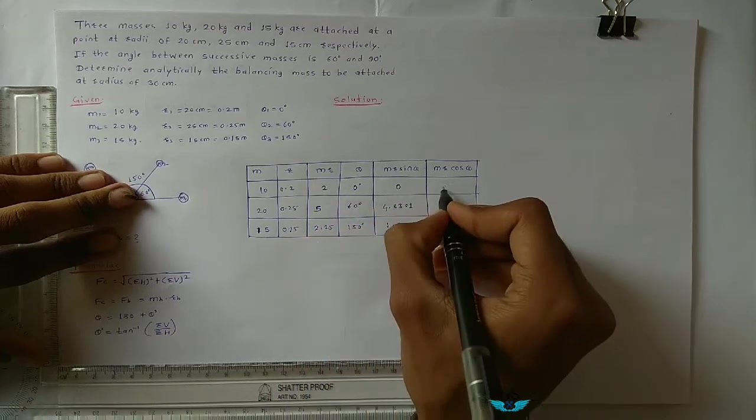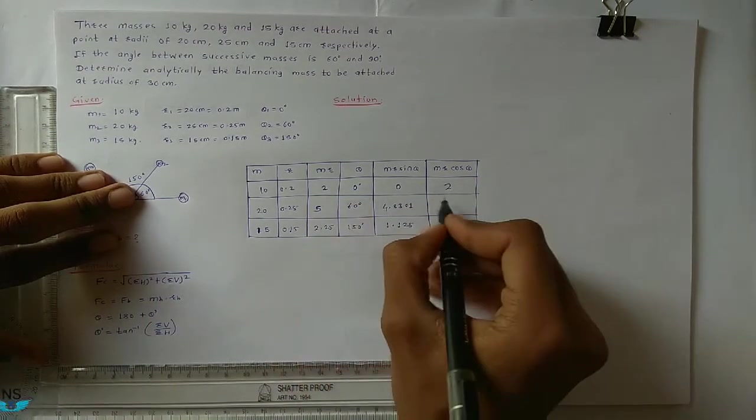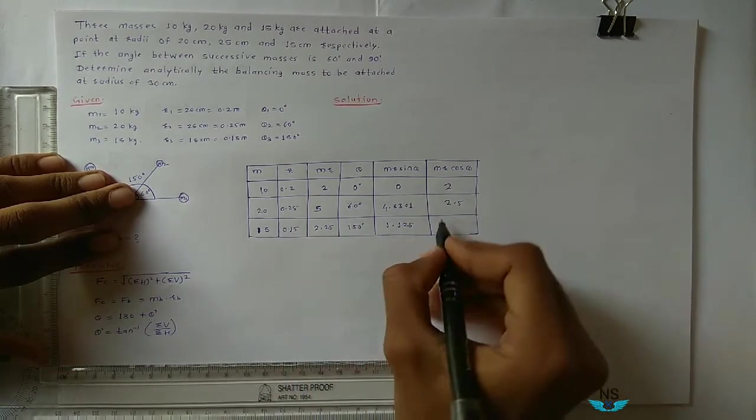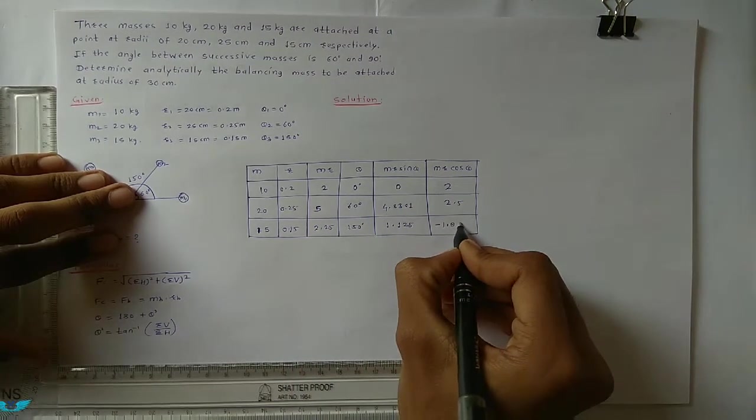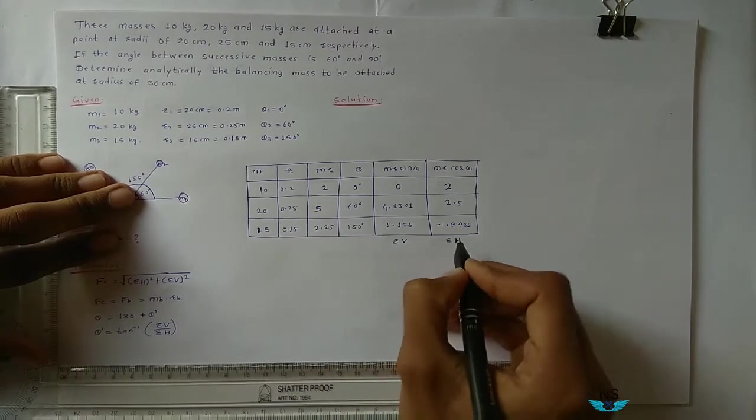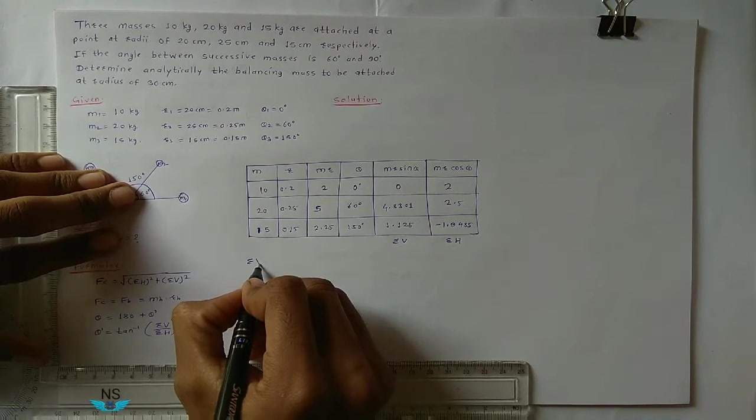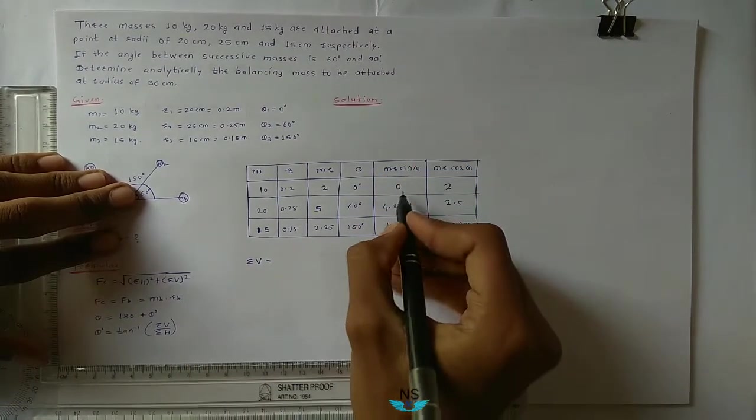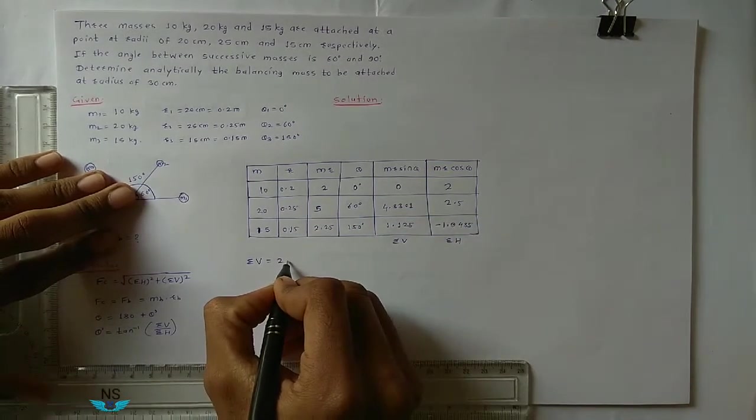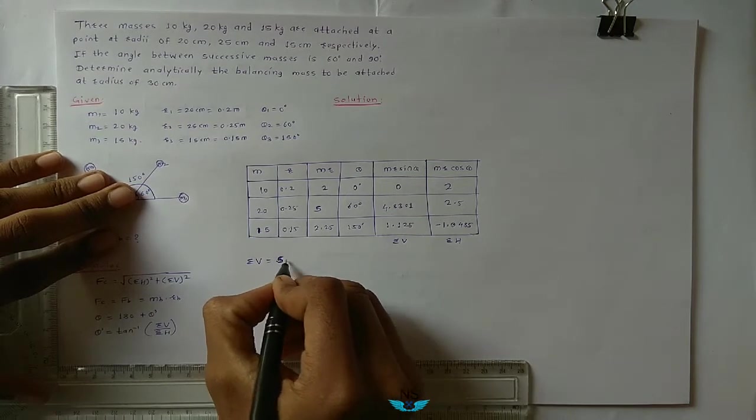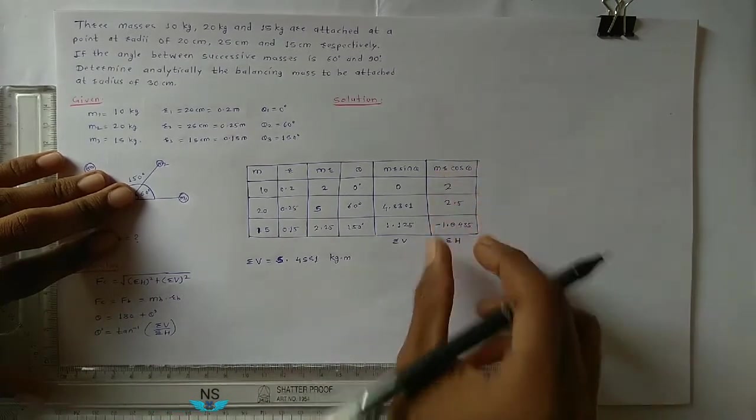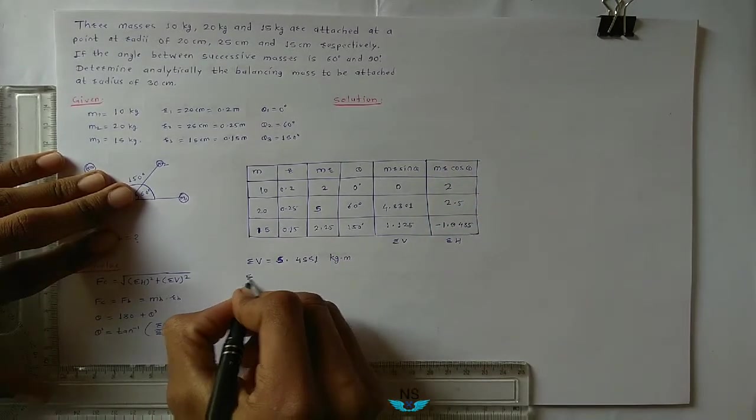Now find M R cos theta: 2 into cos 0 equals 2, 5 into cos 60 equals 2.5, 2.25 into cos 150 equals minus 1.9485. Now this is summation V and this is summation H. Add these three values, you get summation V is equal to 5.4551 kg meter. Add all these three values, you get summation H is equal to 2.5514 kg meter.